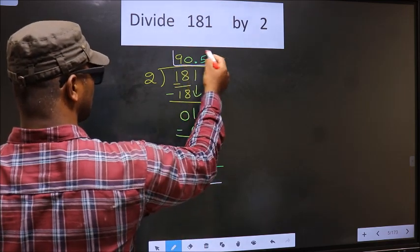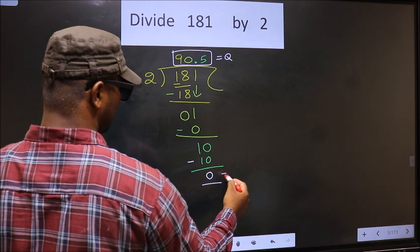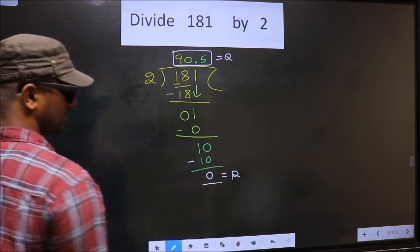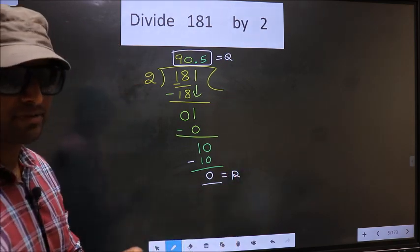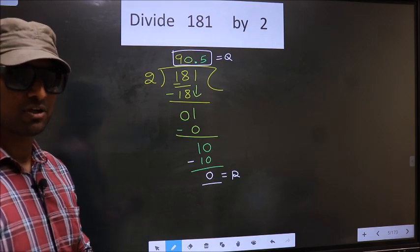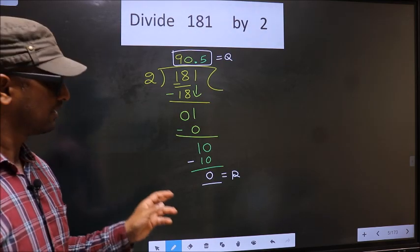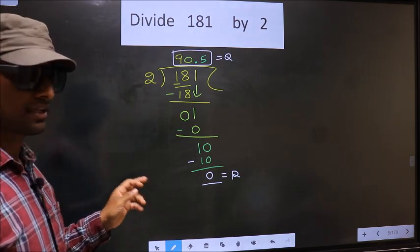This is our quotient. And this is our remainder. Did you understand where mistake happens? You should not do that mistake. Am I clear?